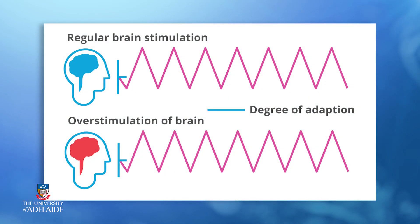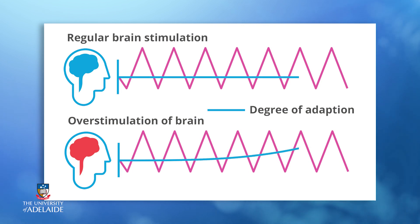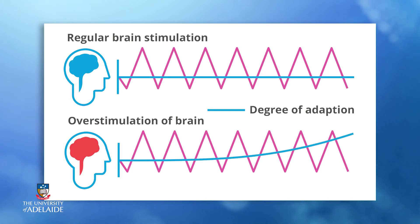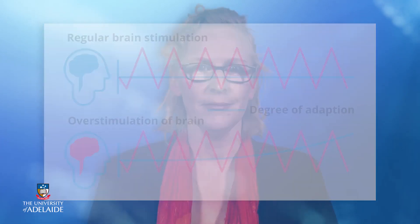The body will start to expect the drug and adapt to its continued presence. Several of the biological signs of addiction, such as tolerance and withdrawal symptoms, are the result of this adaptation. We will look more at this in the video on the biological basis of addiction.